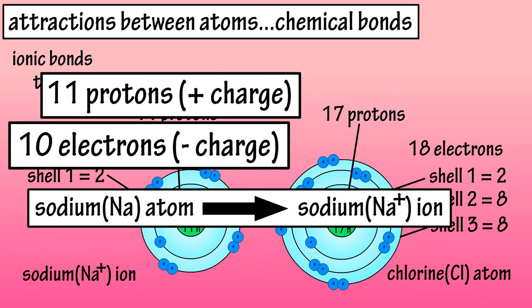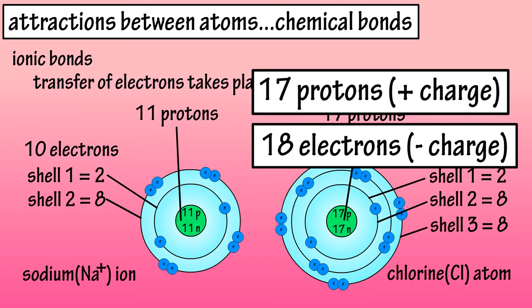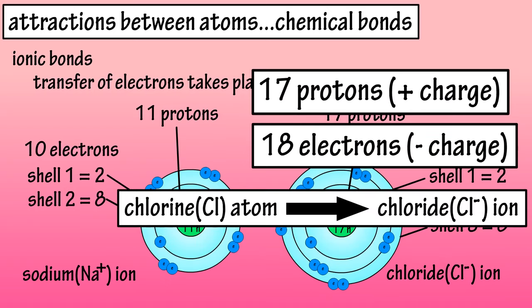An ion is an atom or molecule with a net electrical charge due to the loss or gain of an electron. Since the chlorine atom gained an electron, and now has 17 protons and 18 electrons, it is a chloride ion with a negative charge.